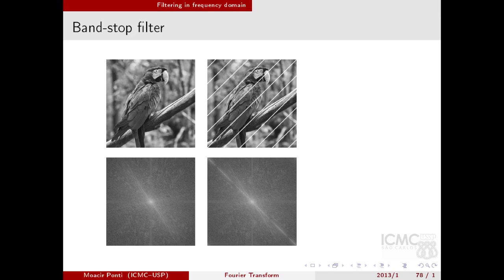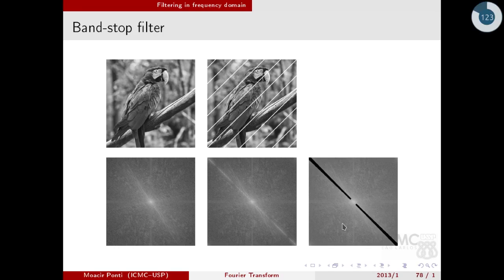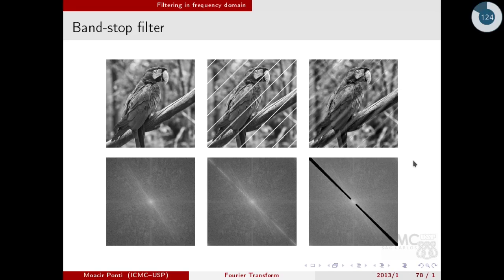An application of a band-stop filter is when I want to remove a pattern that appears on the image, and it can be seen clearly in the Fourier spectrum. I can see there is a pattern in the Fourier domain. So I can design a band-stop filter to remove just those frequencies. As a result, I will have an image that has this interference reduced.